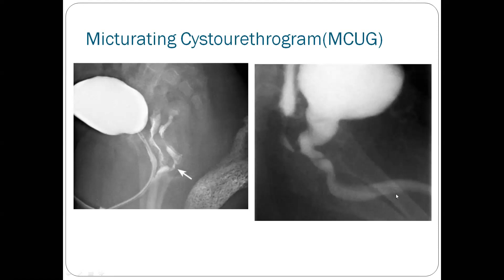This is a typical MCUG in which the long urethra is visible in the male, along with the communication of the rectum with the rectourethral fistula. So the underlying communication and fistula tract are easily diagnosed with the help of these contrast studies.